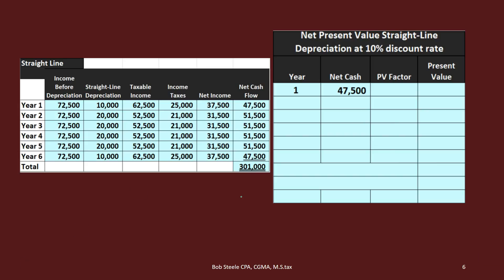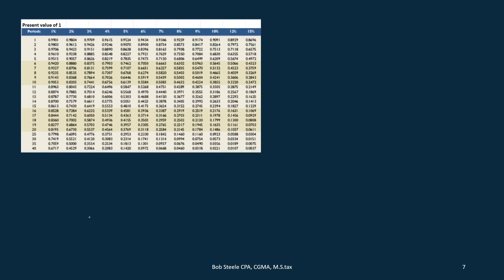Let's set up the calculation. Year one: 47,500; year two: 51,500; year three: 51,500; year four: 51,500; year five: 51,500; year six: 47,500. We need to find the present value factors. We could use a formula or tables. Using tables looks confusing at first, but after a few times it's not bad. You need to pick the right table and have the right factors.